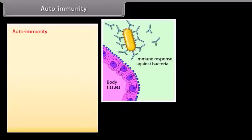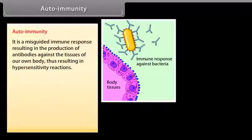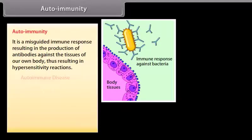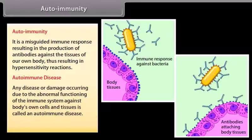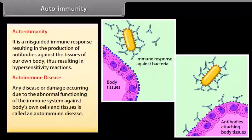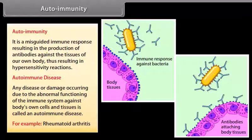Autoimmunity is a misguided immune response resulting in the production of antibodies against the tissues of our own body, resulting in hypersensitivity reactions. Any disease or damage occurring due to the abnormal functioning of the immune system against the body's own cells and tissues is called an autoimmune disease — for example, rheumatoid arthritis.